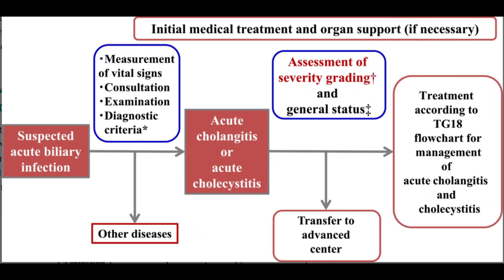Any patient presenting to the emergency as a suspected case of acute cholangitis — we should monitor and stabilize the vital signs, ask for appropriate consultation, and diagnose the case as per the Tokyo Guidelines 2018. For management, we should grade the patient as per the diagnostic criteria and treat according to the flowchart of the Tokyo Guidelines, which we will discuss in the subsequent part of this tutorial.